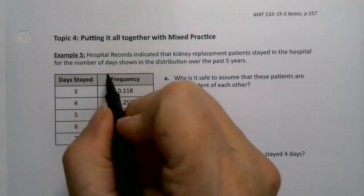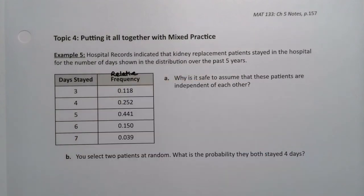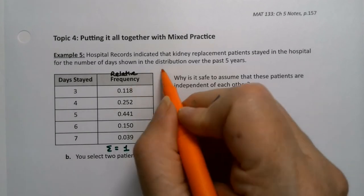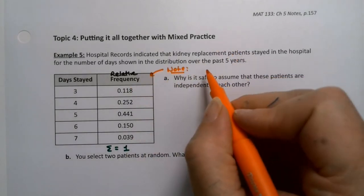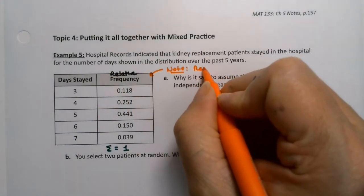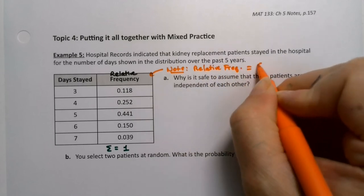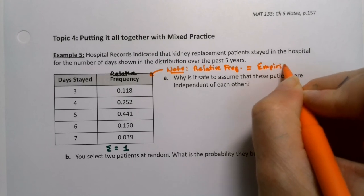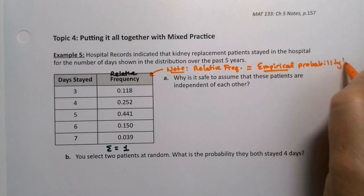If you remember, this is relative frequency, aka probability. This is empirical probability, and the sum of these probabilities was equal to 1. And I'll add just a little note that this is relative frequency, which is empirical probability, because it's from data. Just a little reminder.